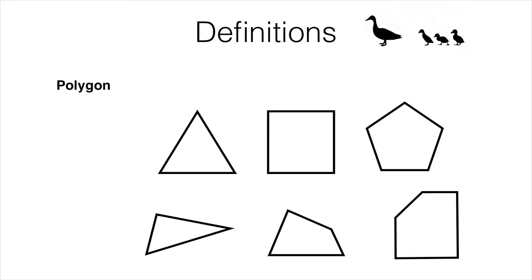In this video we're looking at definitions of keywords in two-dimensional geometry. First up we've got the word polygon. Now a polygon is simply a two-dimensional shape with straight sides.